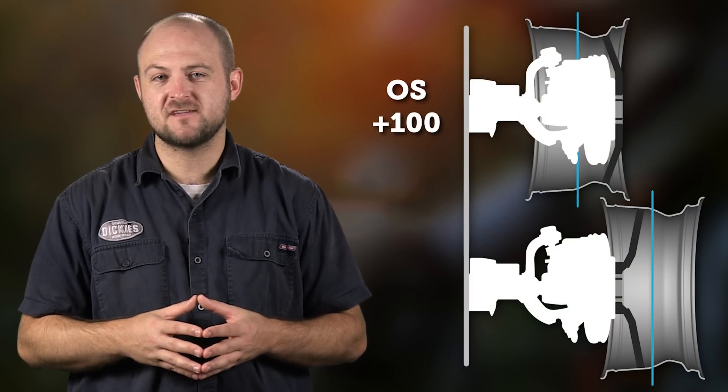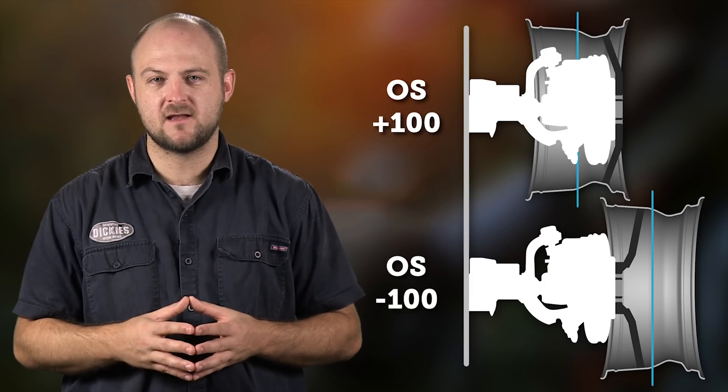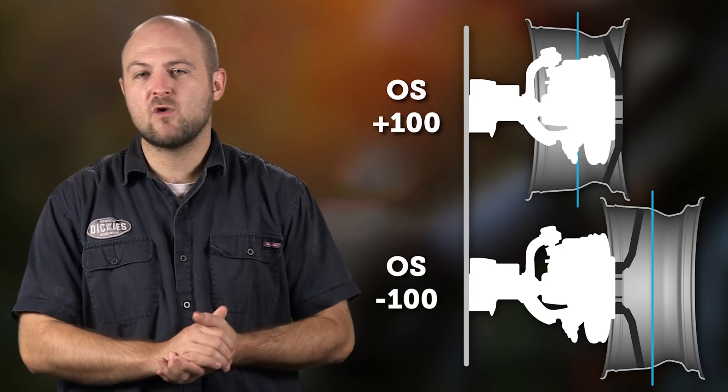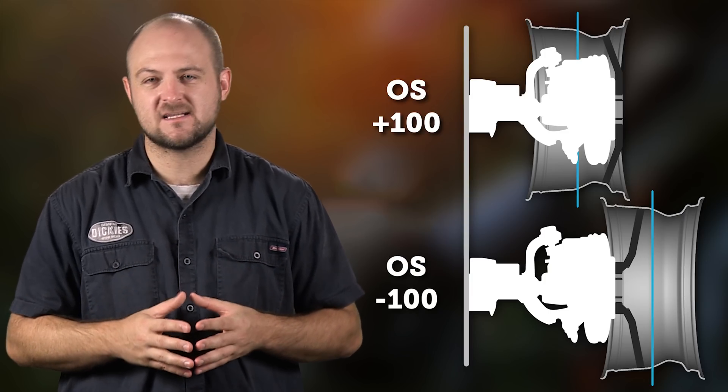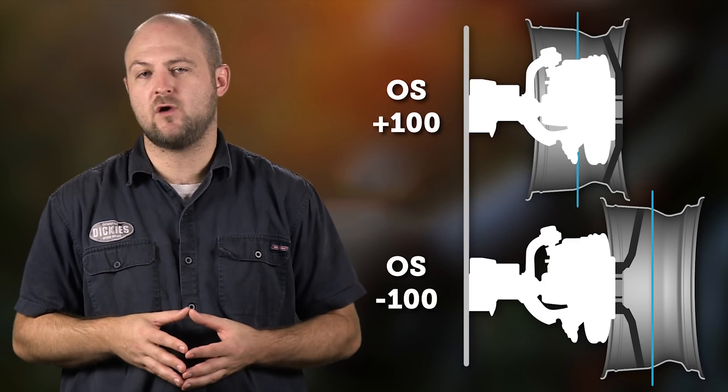For our next two examples, we'll look at what happens to a hypothetical 20x10 wheel with a positive 100 offset and another with a negative 100 offset. You can see on the negative 100 offset wheel just how little backspacing there is, and the exact opposite on the positive 100.